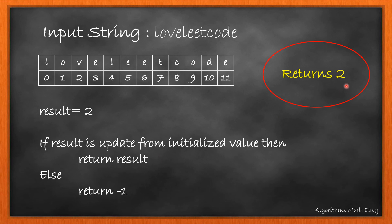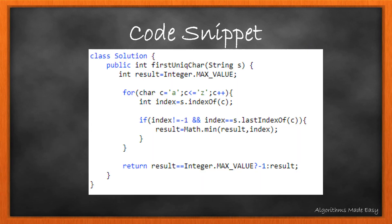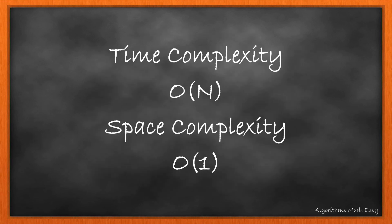If this would not have been the case, the value of result would still be the max value of integer and then we would return minus 1. Here is the actual code snippet of the method. Also check out the link to the Java code in the description below. The time complexity for the indexOf operation is O(n), so the overall time complexity for this algorithm becomes O(26n). The space complexity is O(1).